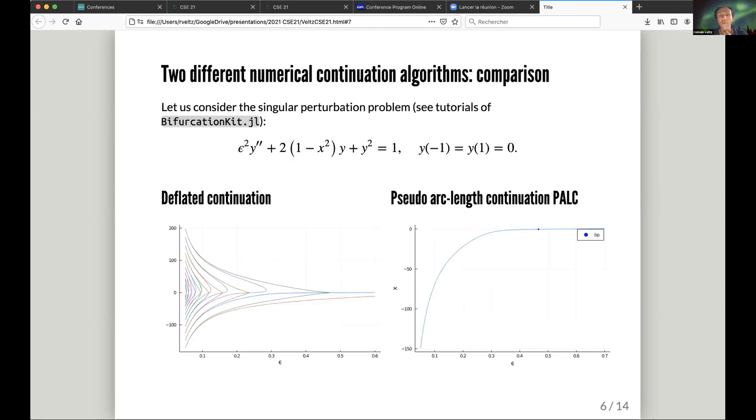A good example here: you can see on the Carrier problem, it's a singular perturbation problem you can find in the tutorials. On the left, you have the result by the deflated continuation method. You can see you have lots of solutions. For example, the red is disconnected from the others. Many of the solutions are disconnected. If you do the PALC method, you start at epsilon is 0.7, you only get one curve, the blue one, and a bifurcation point is detected at let's say 0.45.